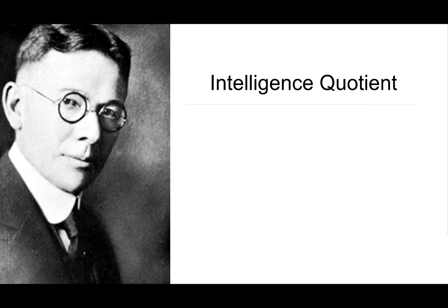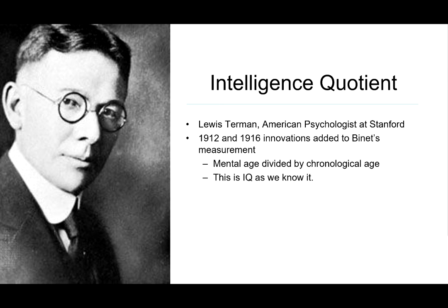Alfred Binet died in 1911, and so he had no say on what happened to his scale after. Lewis Terman, an American psychologist at Stanford University, developed an innovation to Binet's measurement in 1912, in which mental age is divided by chronological age. He claimed it could measure and categorize at all levels of achievement — a far cry from what it was originally intended for. This is what we now know as IQ, the intelligence quotient, a number calculated by a person's performance on the Stanford-Binet test.